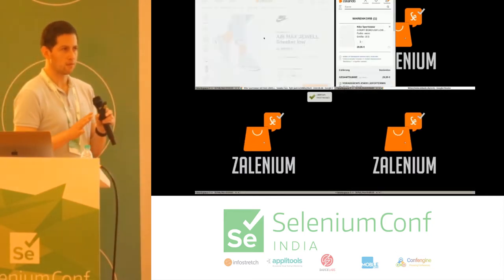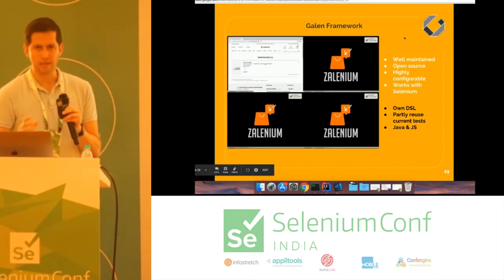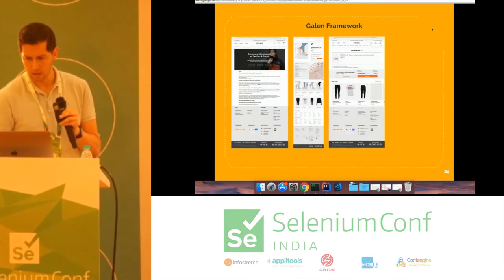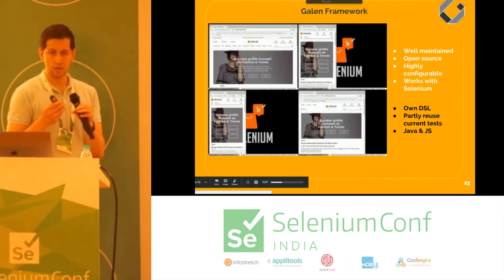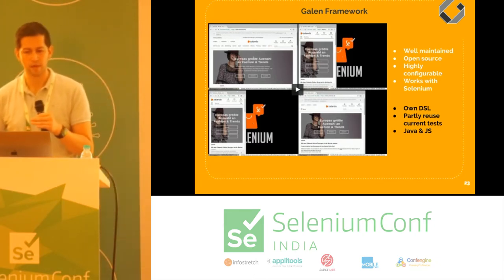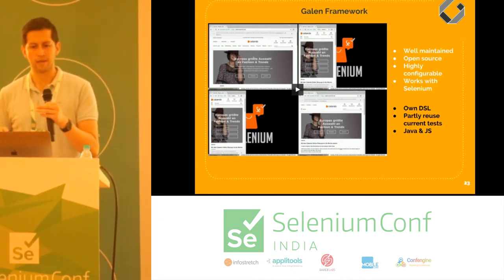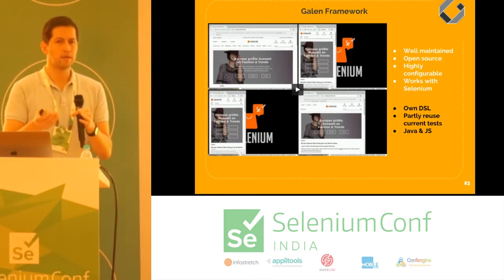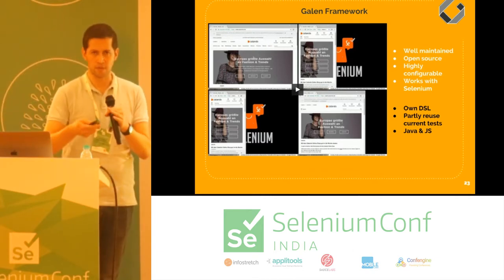Some parts we didn't like so much: Galen has its own DSL. You have to write this spec file to declare what you want to do, so you can only partially reuse your existing tests — which was one of the things we wanted to do. Also, there are only bindings to use this API for Java and JavaScript.